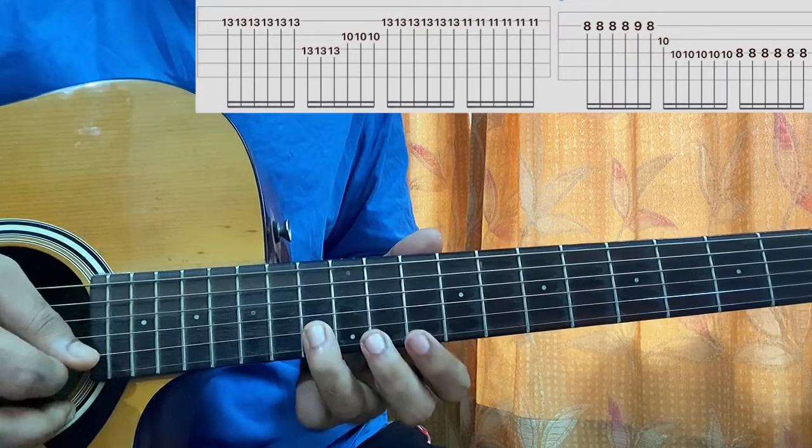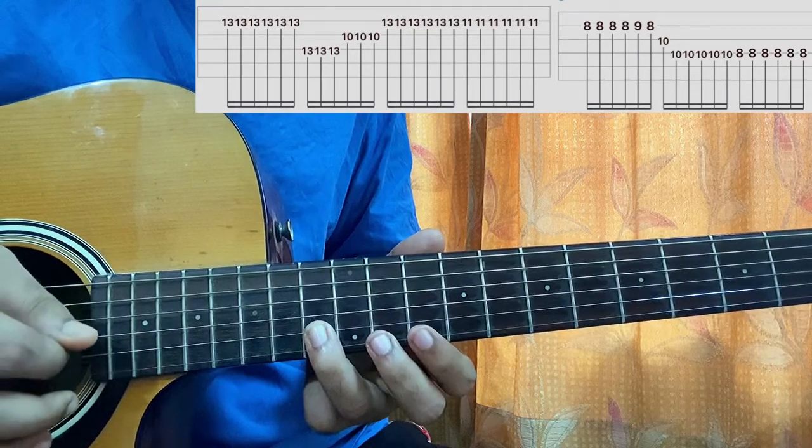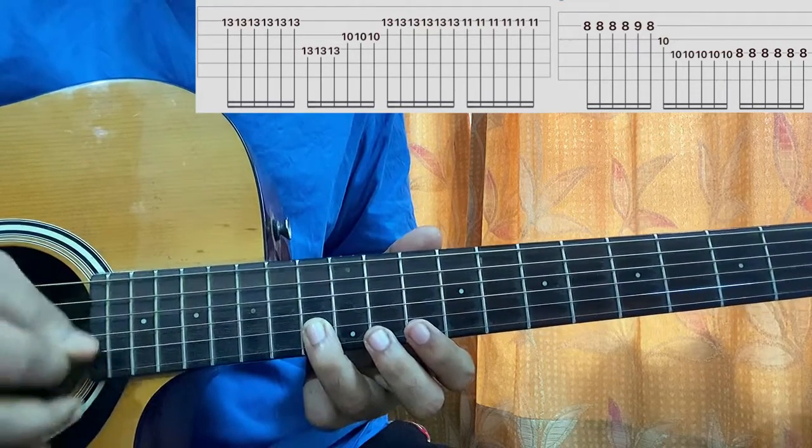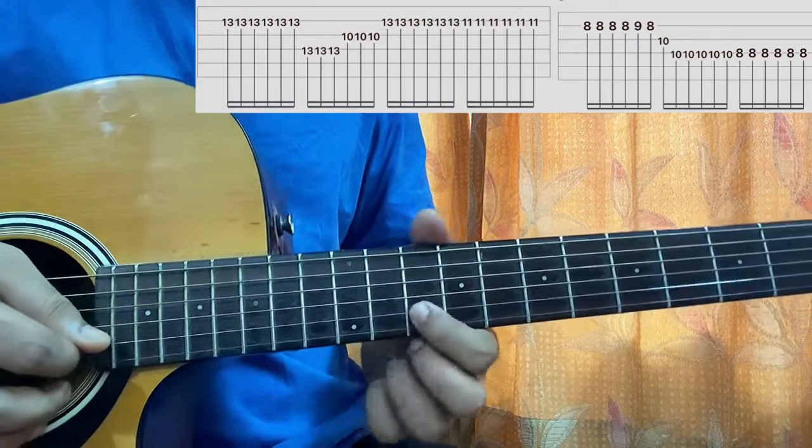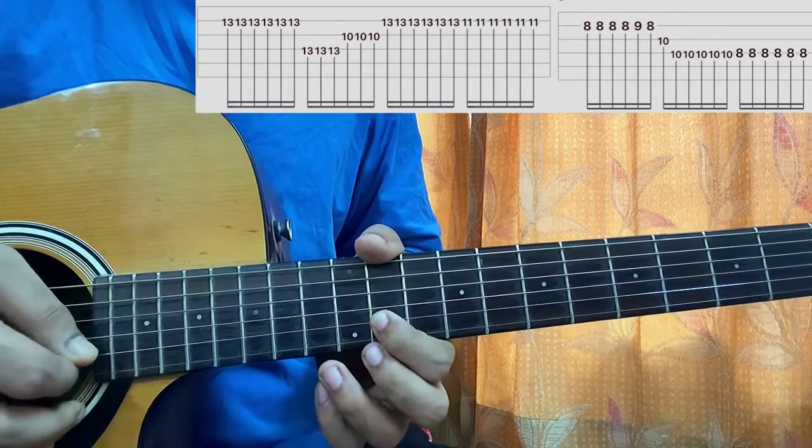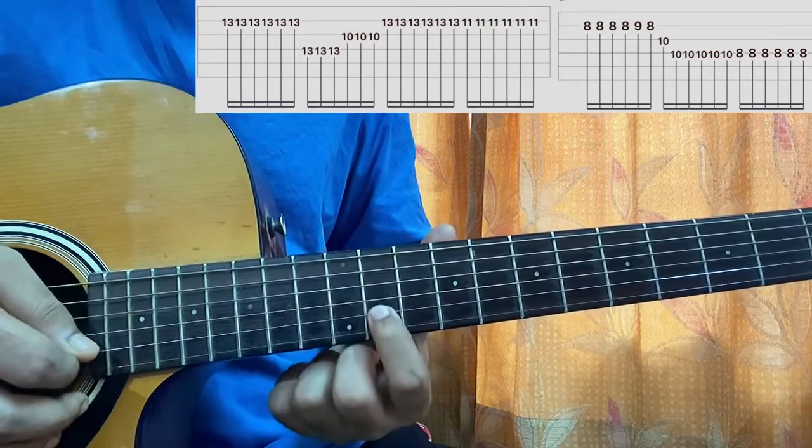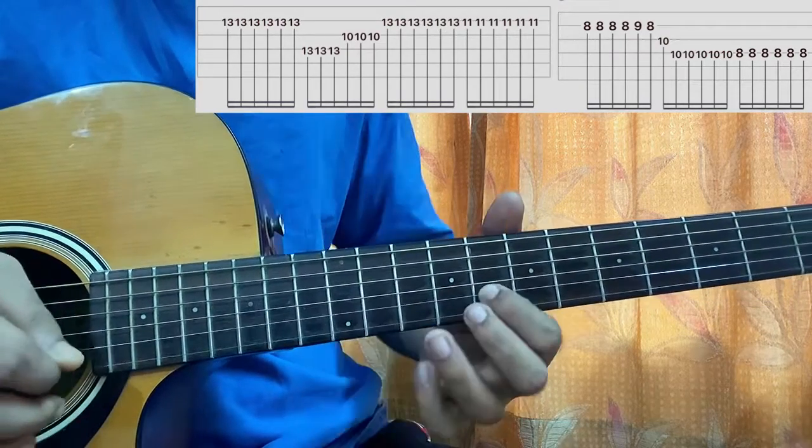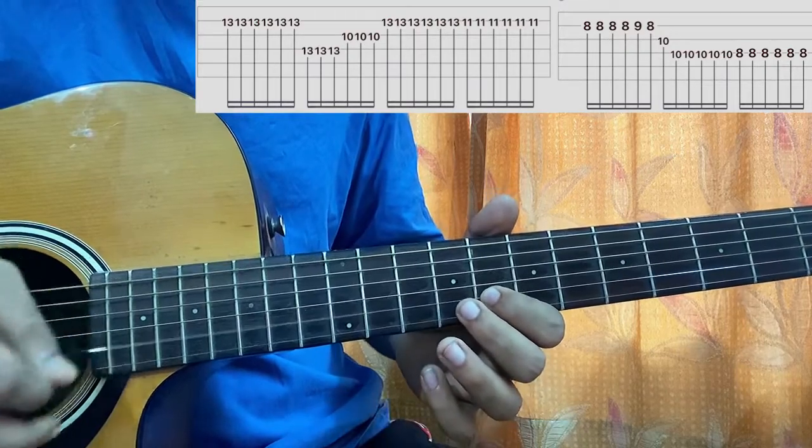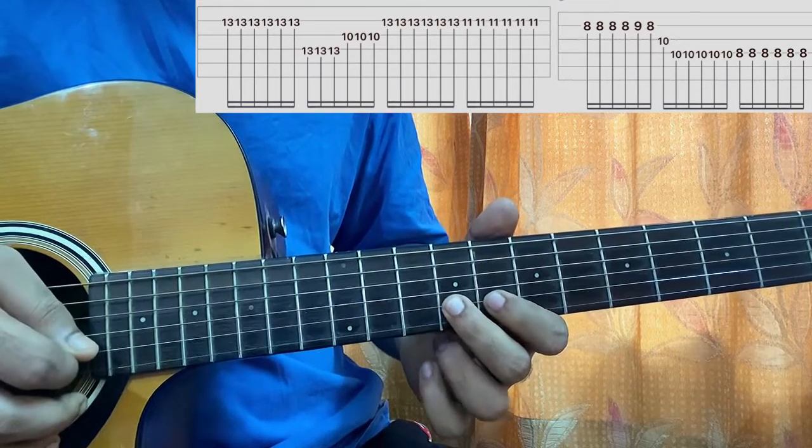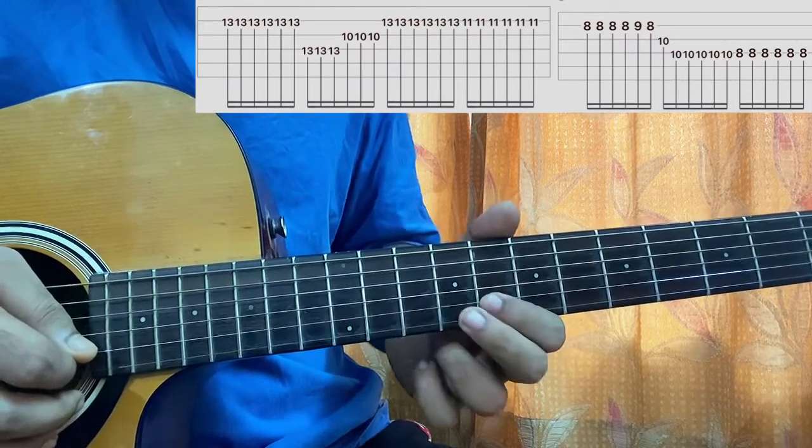Again, I'll play 12th fret on the B string six times, then I'll play 11th fret on B string six times, then I'll do a slide from 11 to 8 on the B string. I'll play that six times, then I'll play 9-8 on the B string like this.